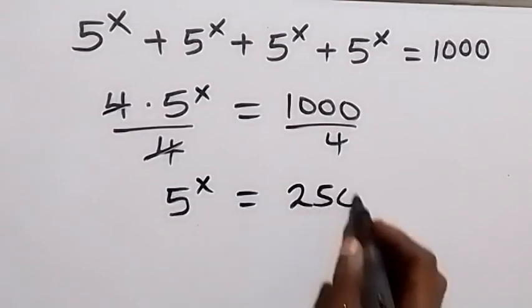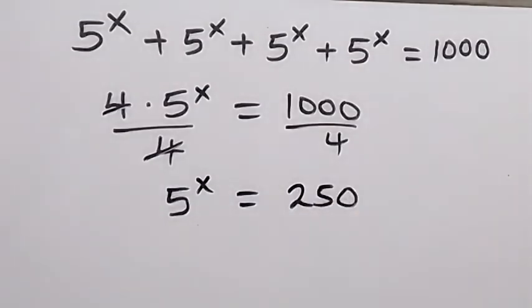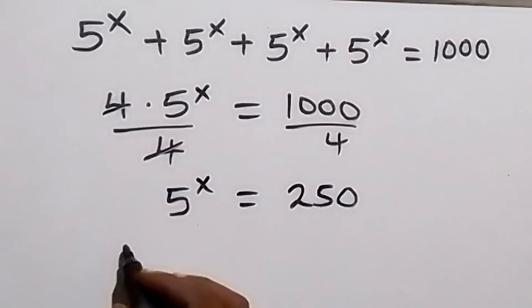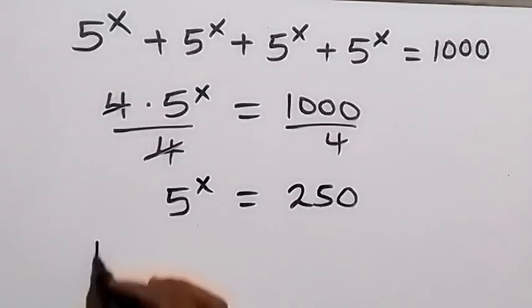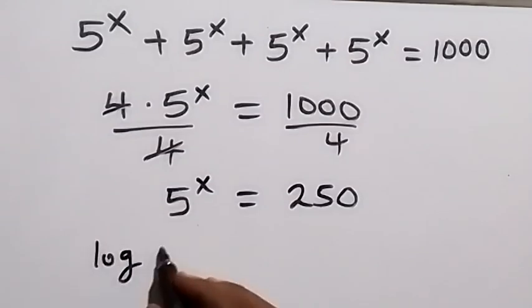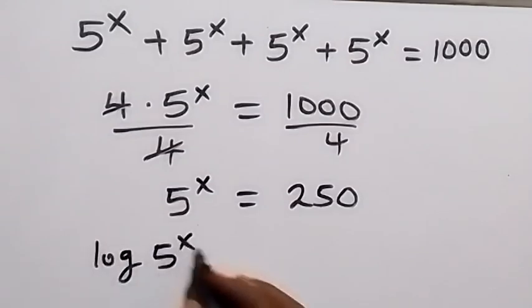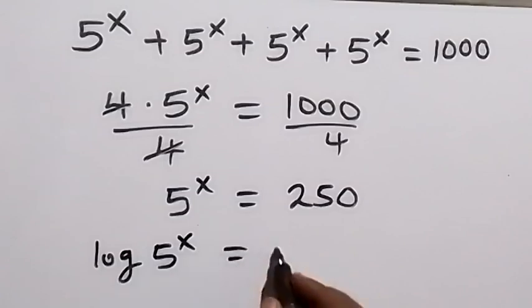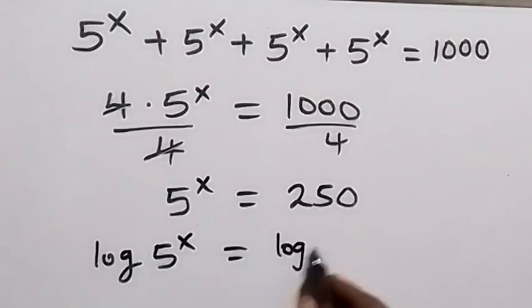Here that will give us 250. From here we can take the log on both sides — we take log on this side: log 5 raised to power x equals log 250.